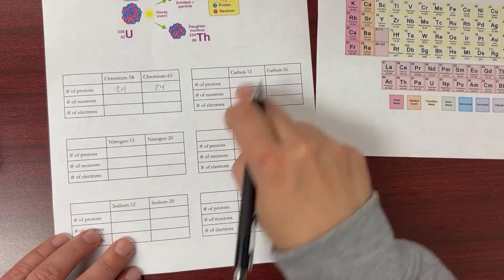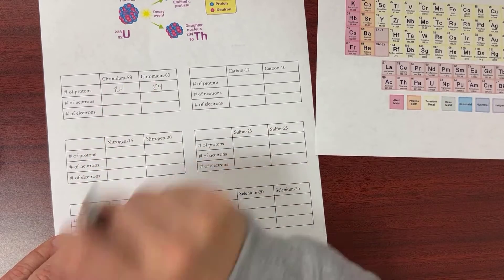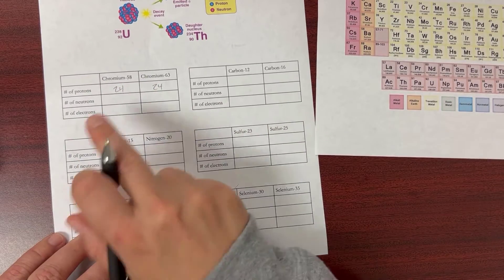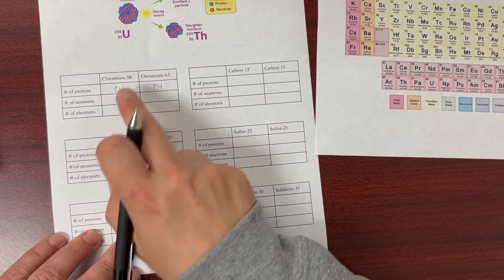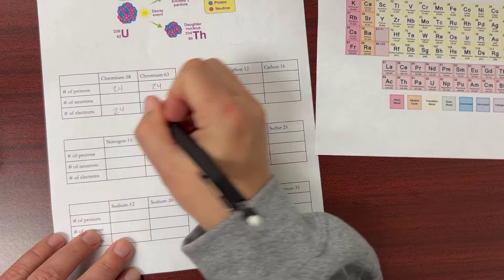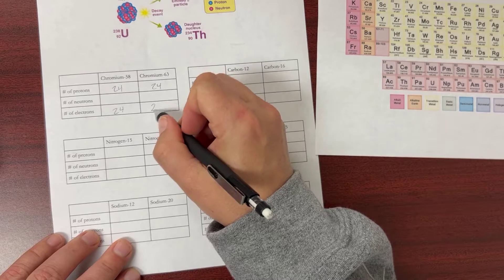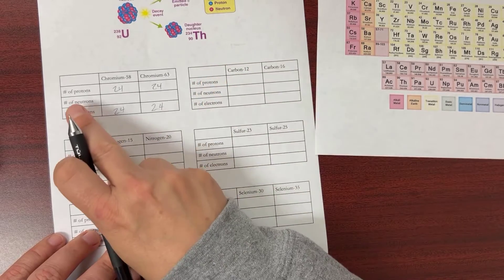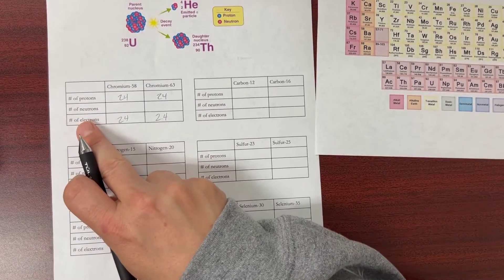That's going to be the same for all of them—they always have the same number of protons. The number of electrons matches the number of protons, so in this case it's 24, and this one is also going to have 24 electrons. It's the neutrons, this middle one, that's going to change.